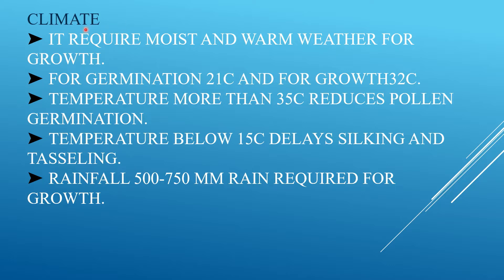Regarding climate, maize is a C4 short day plant and is mainly cultivated up to 3000 meters above sea level. It requires moist and warm weather for growth. For germination, it requires 21 degrees Celsius, and for growth, 32 degrees Celsius — so the entire growth range is 21 to 32 degrees Celsius. Temperature more than 35 degrees Celsius reduces pollen germination.